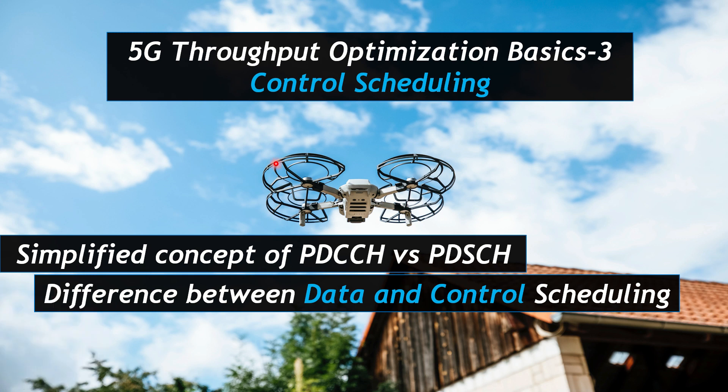Previously we discussed 5G throughput optimization basics and data scheduling. Today we will talk about control channel scheduling from the throughput perspective. The control channel scheduling is more important because any impact on the control channel leads to a much higher throughput impact. Let's understand the difference between data and control — PDSCH and PDCCH — and their scheduling algorithms.